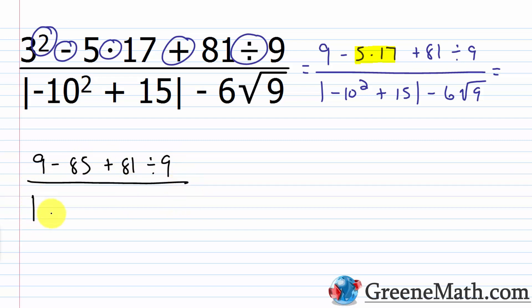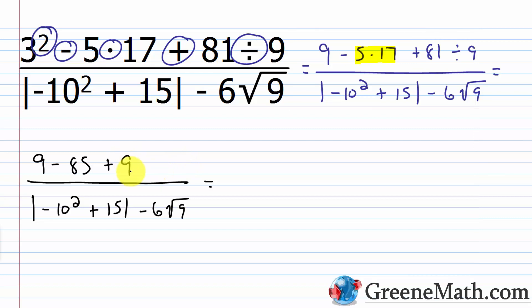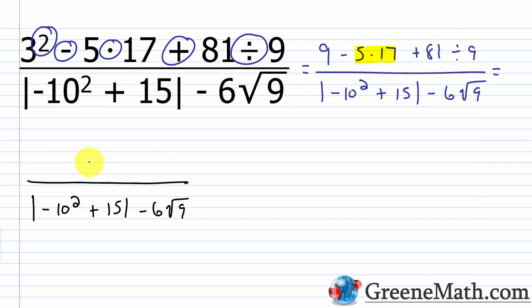We now have subtraction, addition, and division in the numerator. Division is the highest priority, so we work on 81 divided by 9, which is 9. Now we have 9 minus 85 plus 9. Subtraction occurs to the left of addition so it has higher priority: 9 minus 85 is negative 76. Then negative 76 plus 9 gives us negative 67. So the numerator simplifies to negative 67.